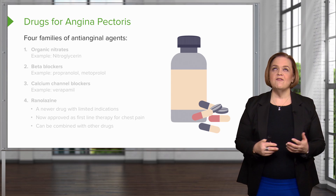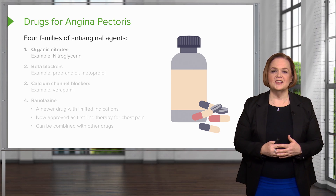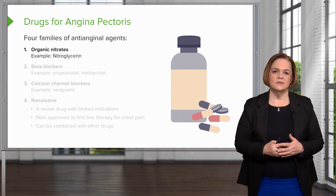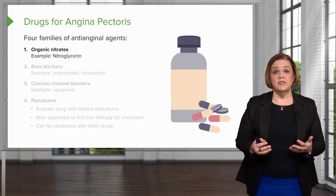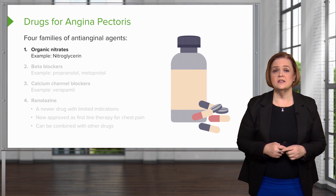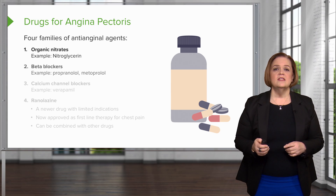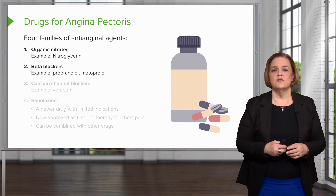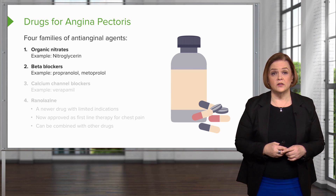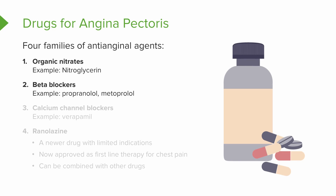The first family is the one everyone sees on TV — organic nitrates. An example is nitroglycerin. The second family is beta blockers, like propranolol and metoprolol. Those both end in -olol. Remember, that's a clue when you're studying medications — the generic name of beta blockers has that -olol ending.